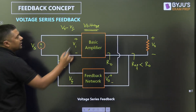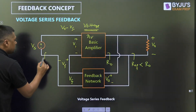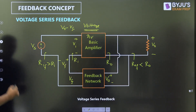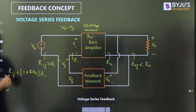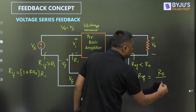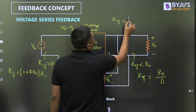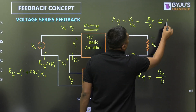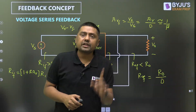The basic gain is given by AV. Input resistance increases because there is series connection, so RIF is greater than RI. RIF is given by (1 + β·AV) × RI. The term (1 + β·AV) is called desensitivity. Output resistance after feedback is R0 divided by D, where D is the desensitivity. Gain after feedback is AV divided by D, which is nearly equal to 1/β. These are all the important formulas related to voltage series feedback.